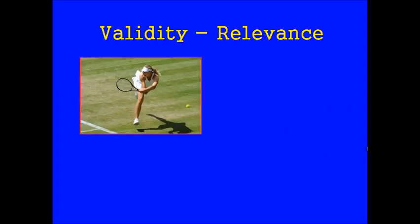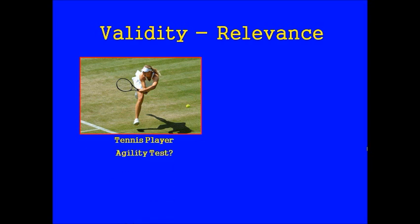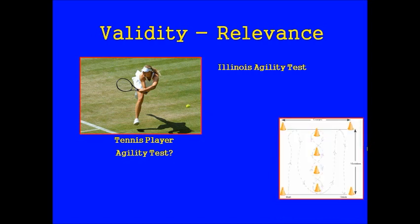Another really important part of this is how relevant the test is. For example, if we have a tennis player and we want to measure their agility, a common test is the Illinois Agility Test. But is this a valid test for a tennis player? The test involves a lot of linear running and running in and out of cones. This is really valid for football because it simulates movements a footballer might do. However, it's not valid for tennis, because tennis players do not perform those sort of tight movements in and out of spaces — and therefore it's not valid.